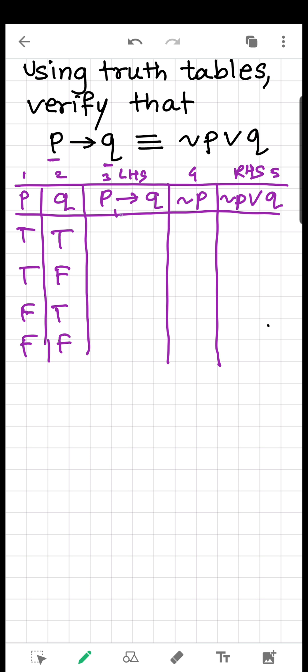Now let's complete the truth table. So what will come in the third column? P implies Q. True implies true - what is that? True. True implies false is false. False implies true is true. And false implies false is also true. So we completed this.